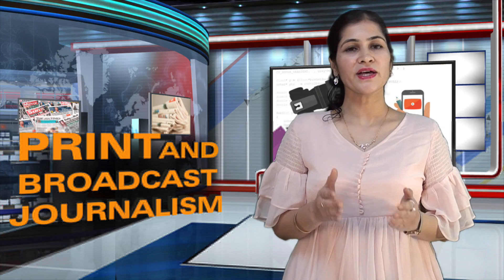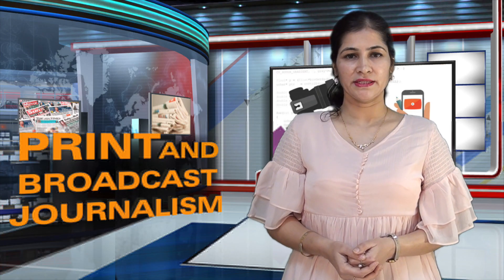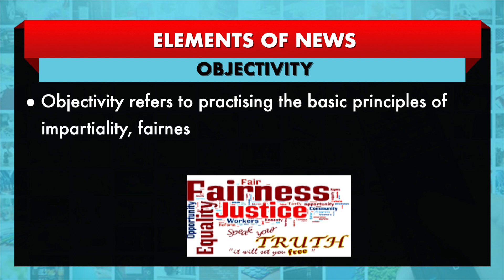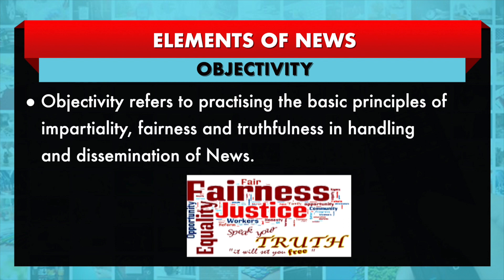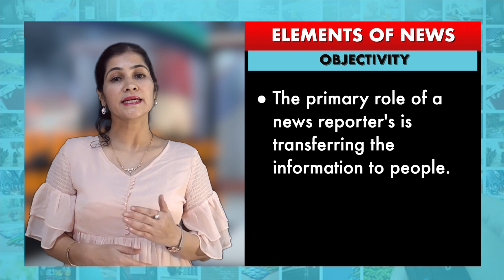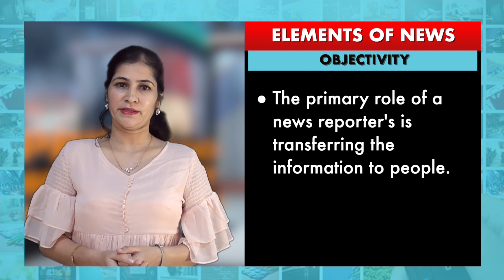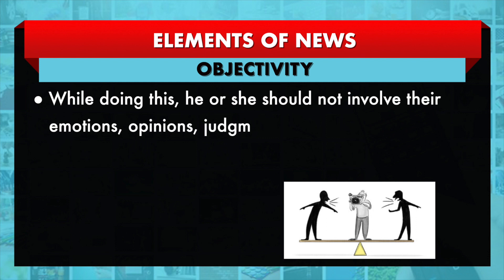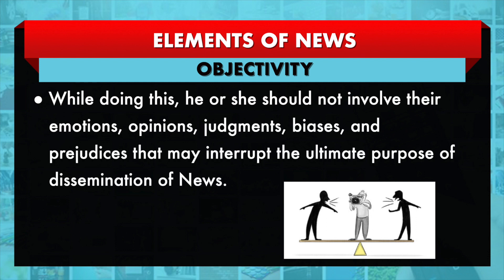The fifth element is objectivity. Objectivity refers to practicing the basic principles of impartiality, fairness, and truthfulness in handling and disseminating news. The primary role of a news reporter is transferring information to people. While doing this, he or she should not involve their emotions, opinion, judgment, biasness, or prejudice, as these may interrupt the ultimate purpose of dissemination of news.